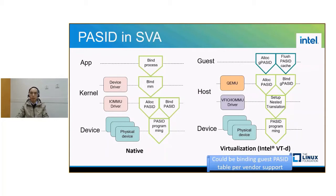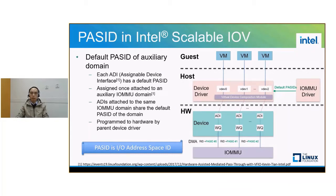After setting up guest SVA, the device would be able to access the virtual address space of the guest application with the PASID. PASID is also the foundation of Intel scalable IOV. Each assignable device interface will be associated with a host PASID. This association happens when its parent device is attached to a domain in auxiliary manner. The IOMMU driver will allocate a default PASID for auxiliary domains, allowing the assignable device interface to access the virtual machine's guest physical address space. As of now, PASID is no longer just tagging process address space — it can also tag guest physical address space, so it's actually an IO address space ID instead of just a process address space ID.